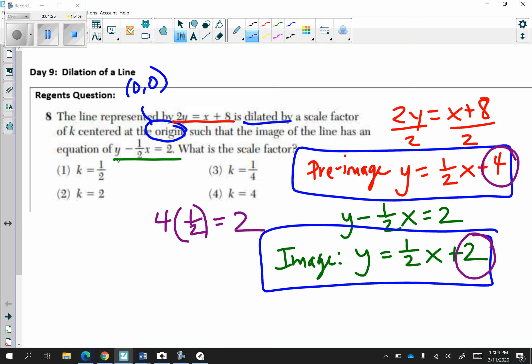Therefore, the scale factor has to be one-half. Remember, dilations are associated with the operation of multiplication.